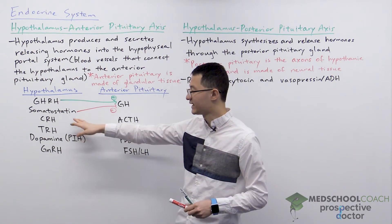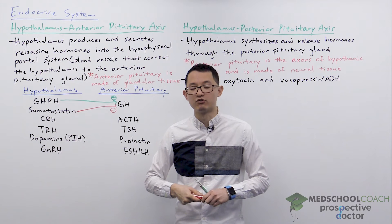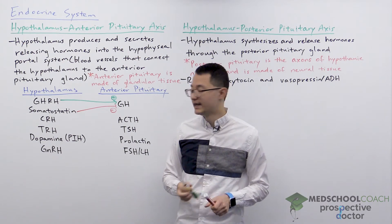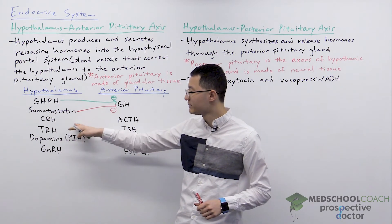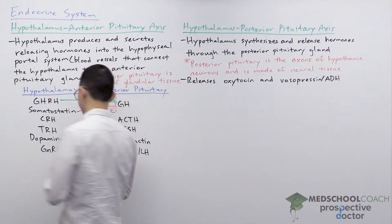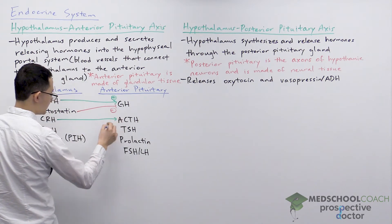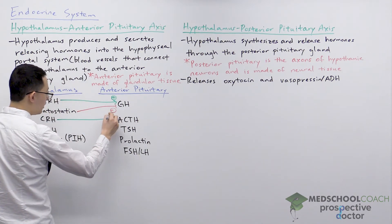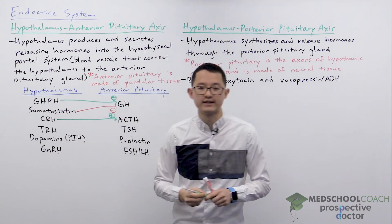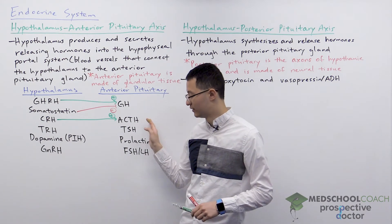We then have CRH — corticotropin releasing hormone. This will stimulate the anterior pituitary gland to release ACTH. ACTH will then go on to stimulate the adrenal cortex to release cortisol.